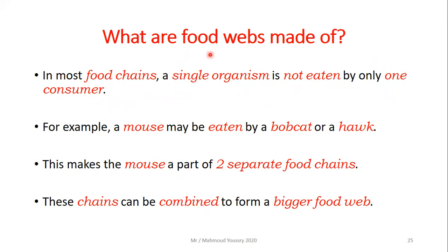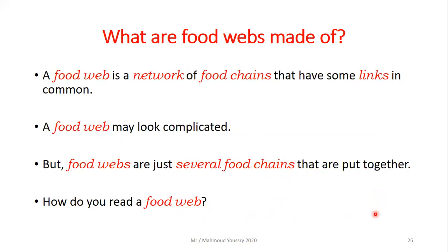In most food chains, a single organism is not eaten by only one consumer, which brings us to food webs. For example, a mouse may be eaten by a bobcat, a hawk, or a snake — making the mouse part of many separate food chains. These chains combine to form a food web. A food web is a network of food chains that have some links in common.